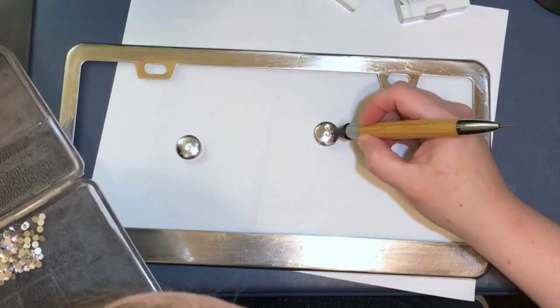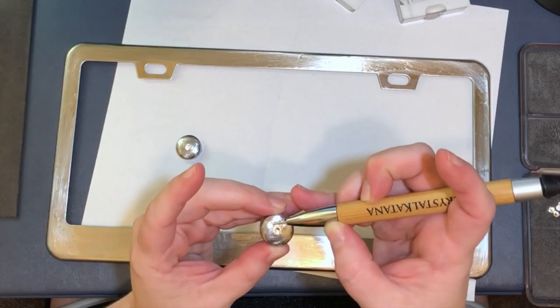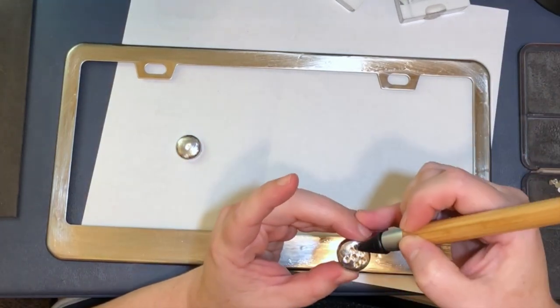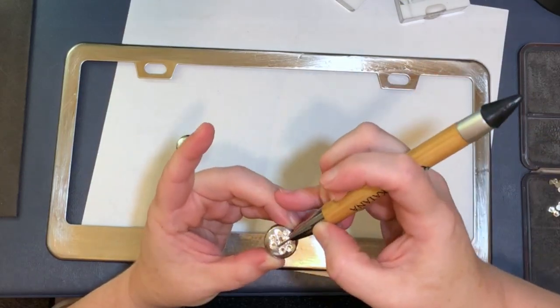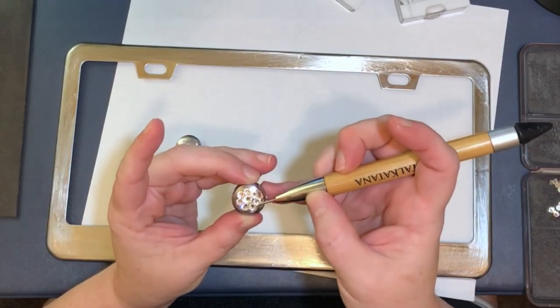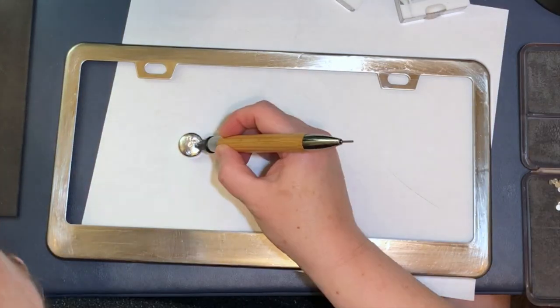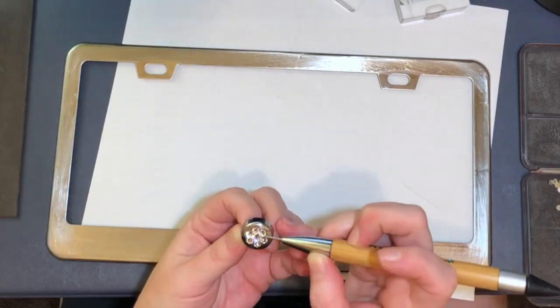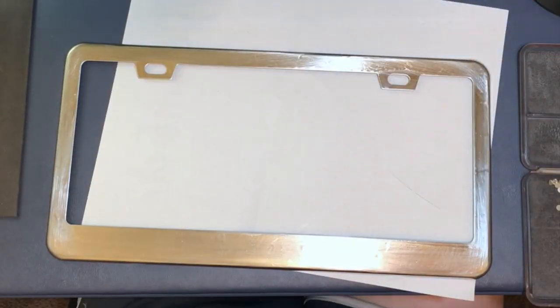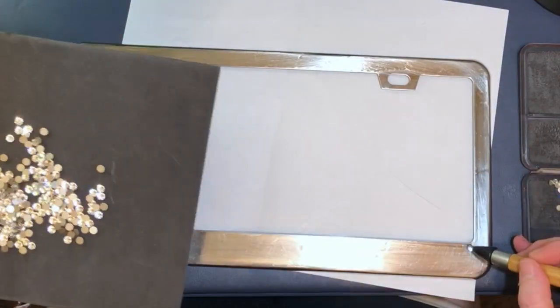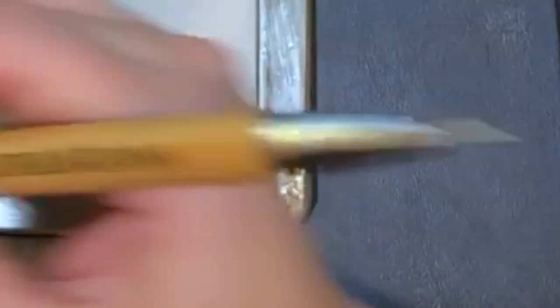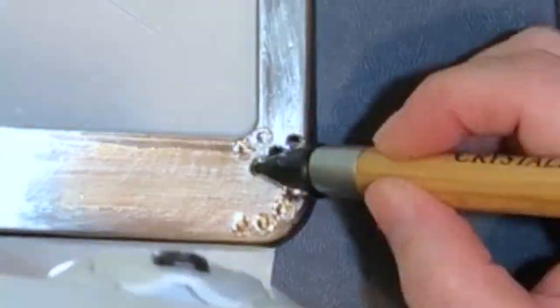You want to make sure that your application technique is straight. It's going to take some practice. Please, please, please don't use E6000. Don't use any type of gem tack or nail glue for this. Just make sure to use this glue.